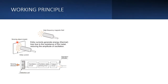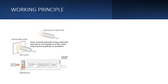The eddy currents get generated in the metal object being sensed. As this object moves away from or closer to the sensor, there are energy losses due to the resistance of the metal, causing a reduction in the amplitude of oscillations. This is sensed by the sensor and it gives a signal. On the back side of the sensor there is a small indicator light — green or red — showing whether a part is in proximity.